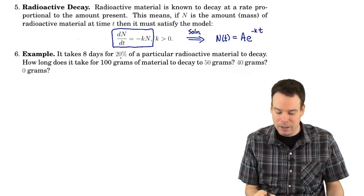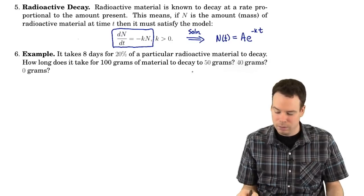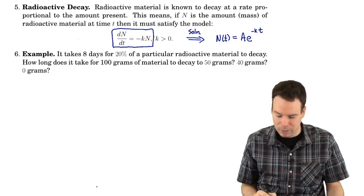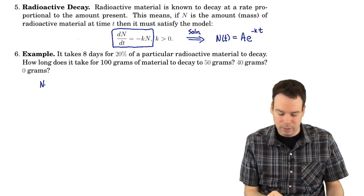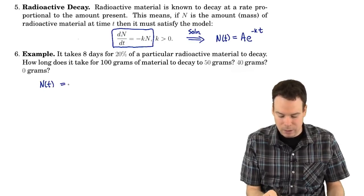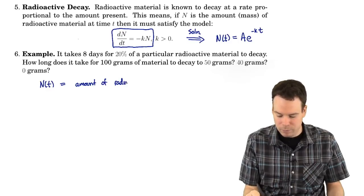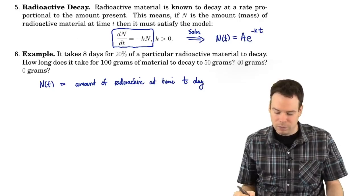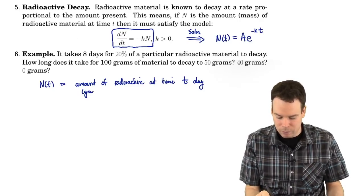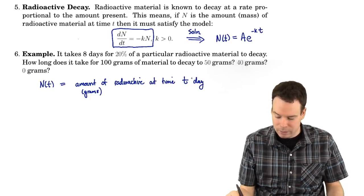So let's look at an example. It takes 8 days for 20% of a particular radioactive material to decay. How long does it take for 100 grams to decay to 50 grams, 40 grams, and 0 grams? Let n(t) be the amount of radioactive material at time t. Here we're going to work in days because the question is given in terms of days, and the amount is measured in grams. So n(t) is the amount in grams of radioactive material at time t days.